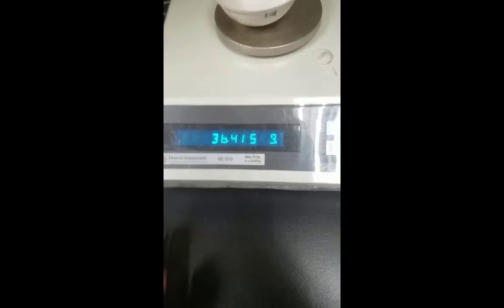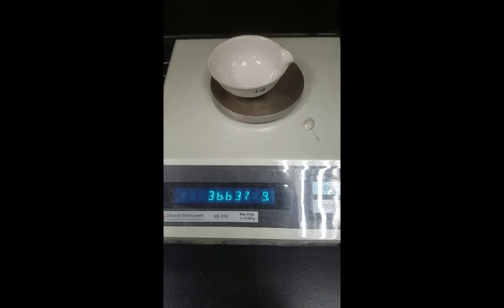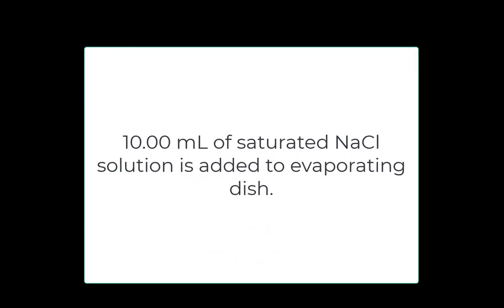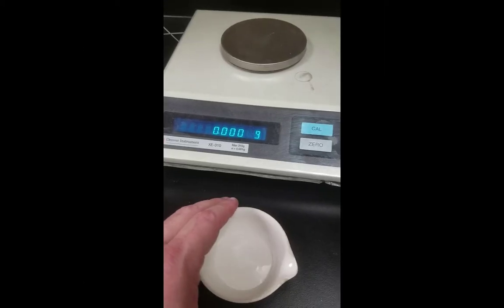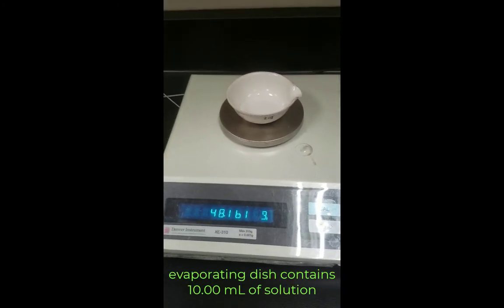I begin the experiment by weighing a clean and empty evaporating dish. At this point I added 10.00 milliliters of saturated sodium chloride solution — I do not have a video showing this process, you just have to take my word for it. Next, I weigh the evaporating dish that contains the 10.00 mL of sodium chloride solution.